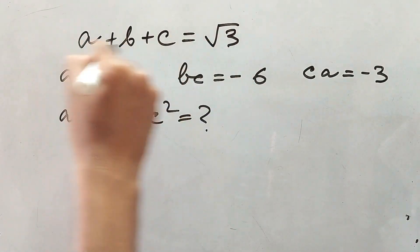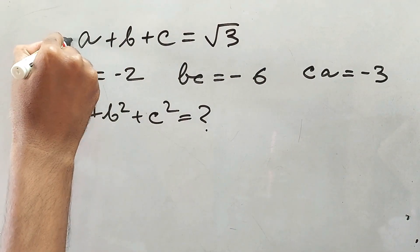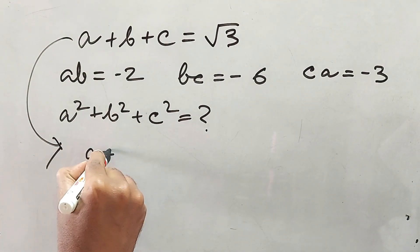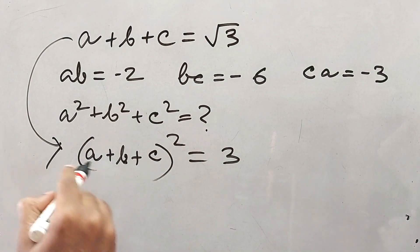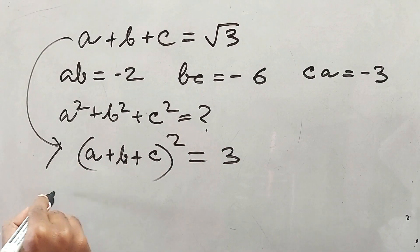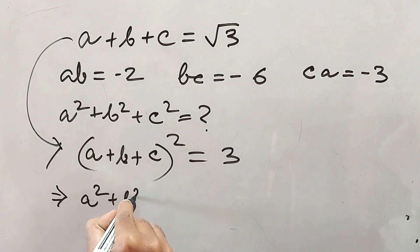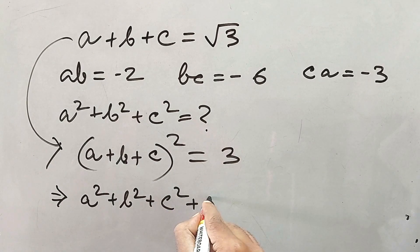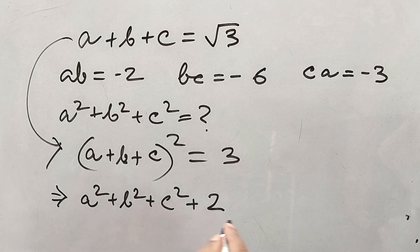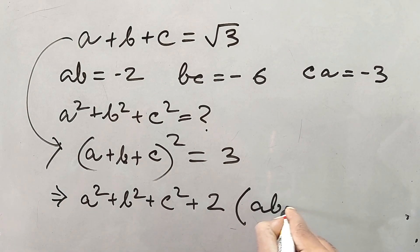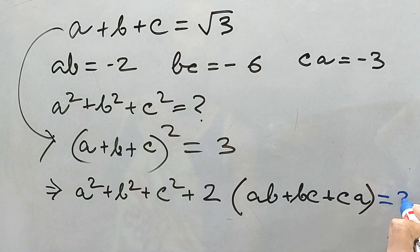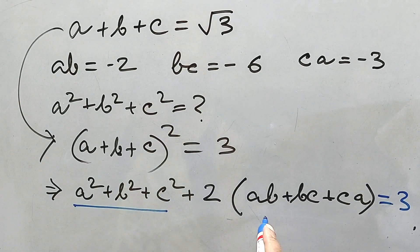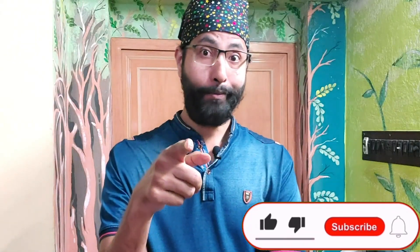We'll have to use the formula. Just take the square of A plus B plus C directly. That gives A squared plus B squared plus C squared plus 2AB plus 2BC plus 2CA, where we take 2 as common: 2 into AB plus BC plus CA. So this equals 3. We know the values of AB, BC, and CA — don't forget to write your answer in the comment box, I'll be waiting for it!